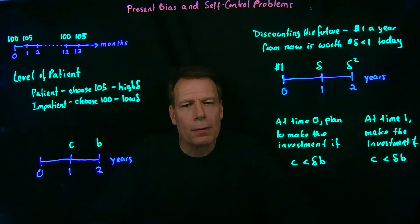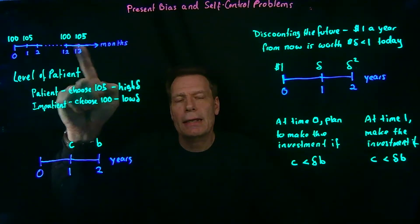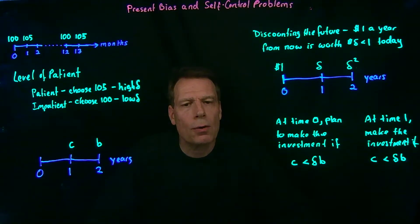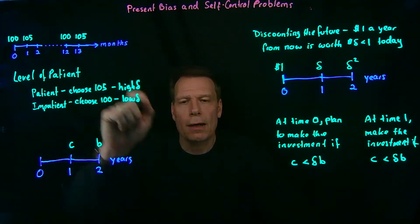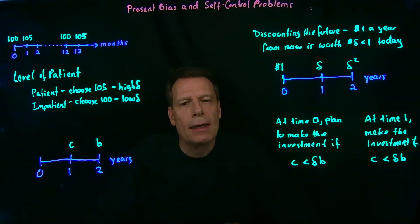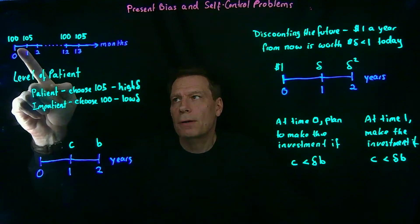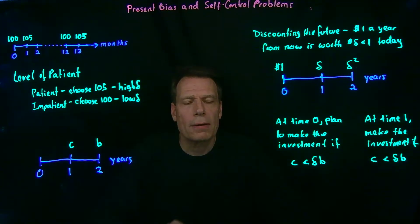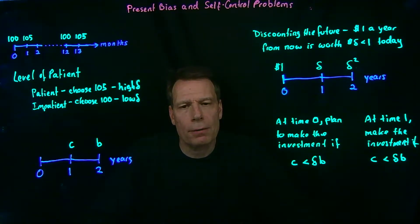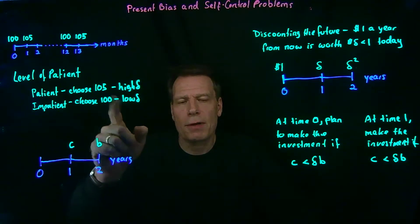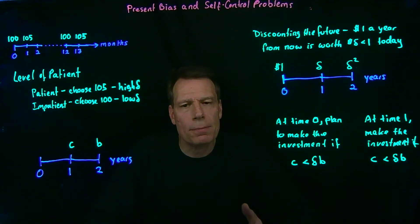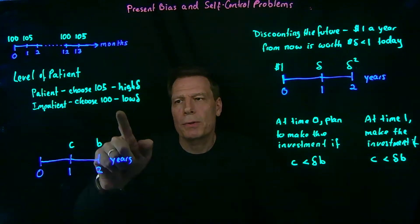We saw this first in an example where we consider two types of choices. In the first choice, you could choose between getting $100 twelve months from now or waiting an additional month to get $105. In the second choice, you could take $100 now or wait for a month for $105 a month from now. And we said that patient people will always wait, they'll always choose the $105, whereas impatient people will not wait, they'll always choose the $100.